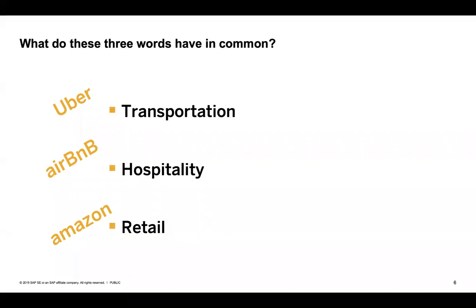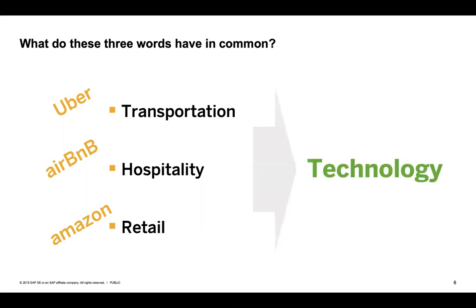What do all these disruptions have in common? None of the disruptors had, in the first sense, anything which you would basically need to be successful in that industry. Uber did not have one car. Airbnb does not own one bed or one hotel. Amazon did not have one shop at that time. But still, they were able to completely disrupt these industries — and they all did it just by technology. Since we're talking about disruption, maybe you may think it will definitely not hit me.